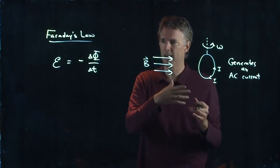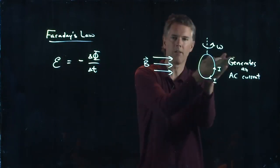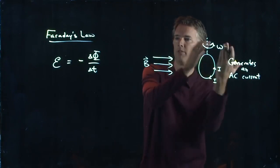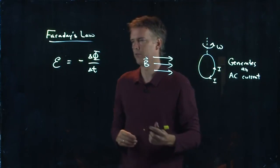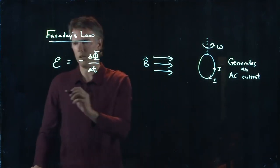We can understand that from this idea of flux. Flux was positive in one direction, then the loop flipped around so now it was negative, then it keeps going and flips back to positive and so forth. But let's say we do this with more than one loop.